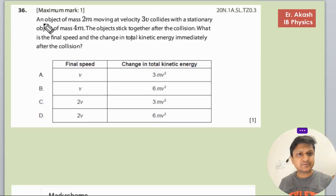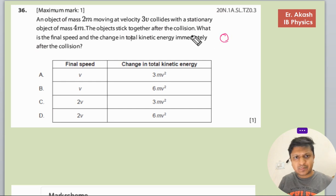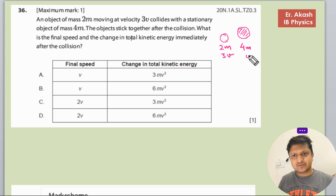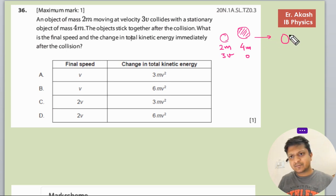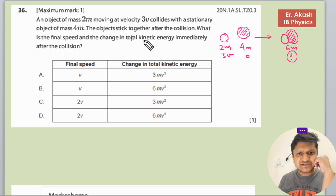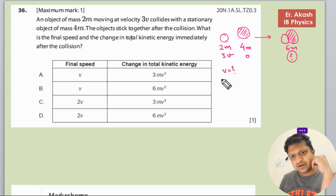The question says that an object of mass 2m and velocity 3v collides with a stationary object of mass 4m and velocity 0. The objects stick together after the collision. The combined mass is 6m, and we have to find the final speed and the change in total kinetic energy.